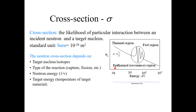In this diagram, for the thermal neutron region — up to a certain point — the absorption cross-section has a higher value. But when we enter the fast neutron region, the absorption cross-section is reduced. So this gives a brief overview of absorption cross-sections.